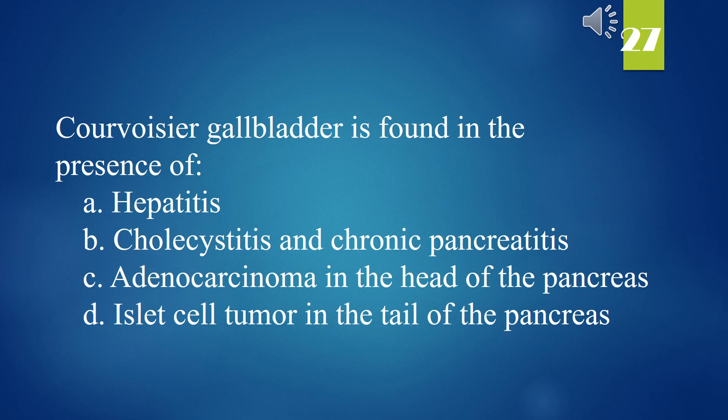Courvoisier gallbladder is found in the presence of: A. Hepatitis. B. Cholecystitis and chronic pancreatitis. C. Adenocarcinoma in the head of the pancreas. D. Islet cell tumor in the tail of the pancreas. The answer is C. Adenocarcinoma in the head of the pancreas.